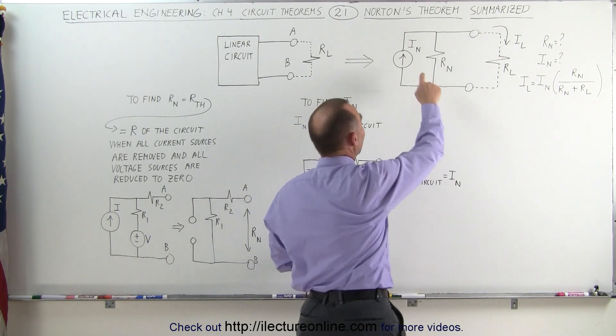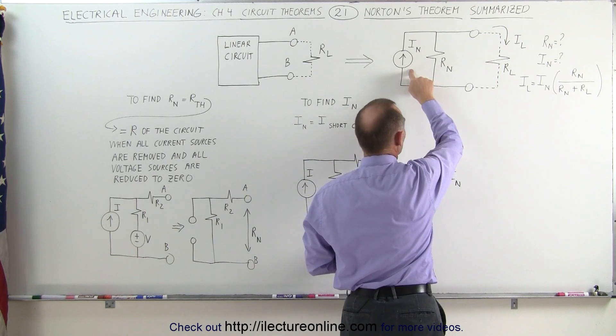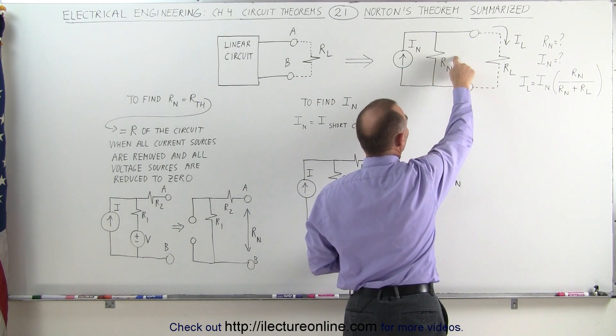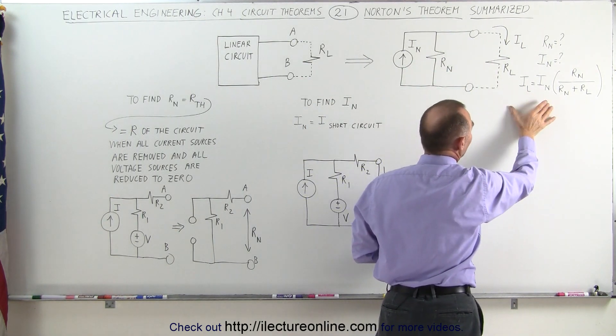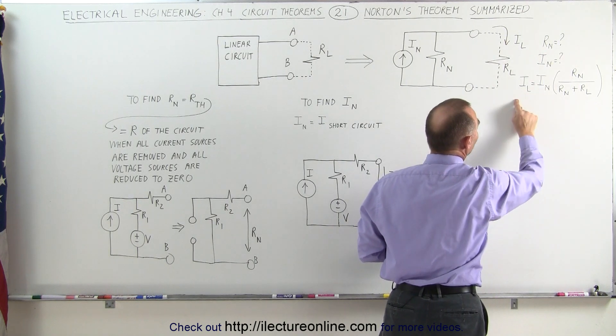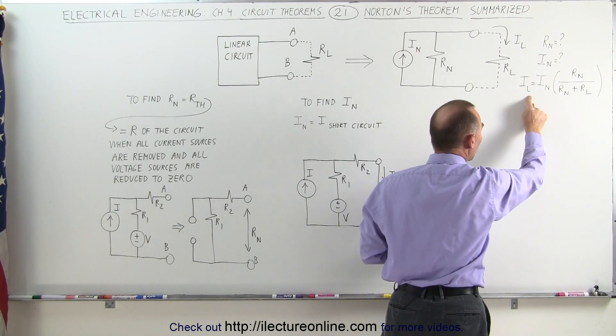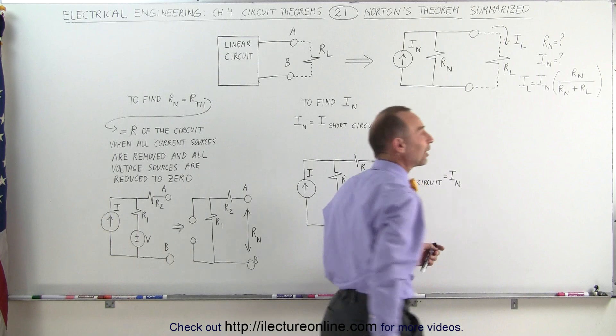The exercise then becomes to find that equivalent Norton current and the resistance of that Norton circuit, and then by finding those two, we can find the current through the load resistor using that equation.